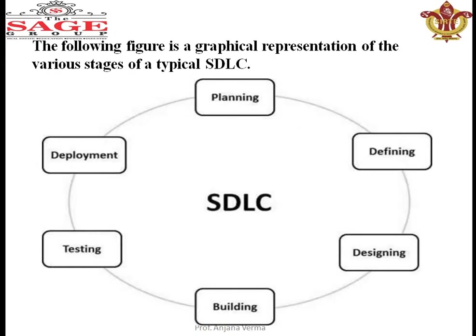So we saw that the Software Development Life Cycle has six stages. Diagrams may vary but the main stages are: planning, designing, building, testing, and deployment. Deployment includes delivery and maintenance. Planning includes resource gathering. Defining and designing can sometimes be one stage or separate. Building means development. Testing is done on the product. Maintenance, risk analysis, and software configuration and change management also come under deployment.